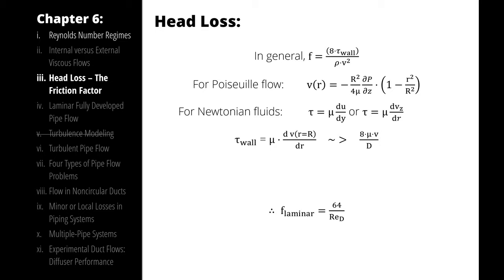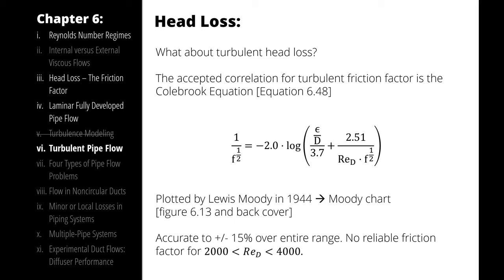For turbulent flow, our equation looks like this. This is called the Colebrook equation, and it relates the friction factor to relative roughness and the Reynolds number.